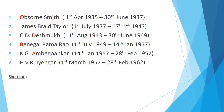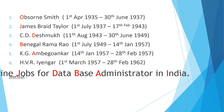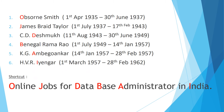The first Indian RBI governor is C.D. Deshmukh. The fourth RBI governor is Benegal Rama Rau. After Benegal Rama Rau, the next RBI governor is K.G. Ambegaonkar, and the next one is H.V.R. Iyengar. The shortcut trick to remember these first six RBI governors is: 'Online jobs for database administrator in India.'